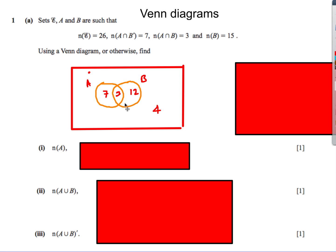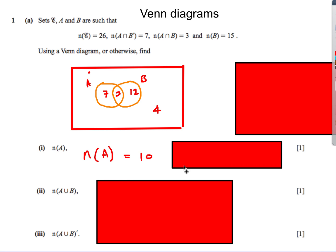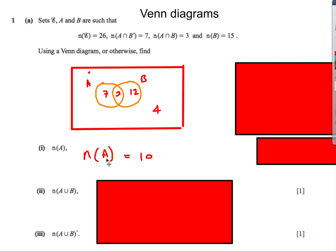A ∩ B = 3, so the middle section is 3. n(B) = 15 and 3 are already in the middle, so this section of B only must be 12. A ∩ B' is just the A-only region, so that's 7. Everything totals 26, so the outside region must be 4.